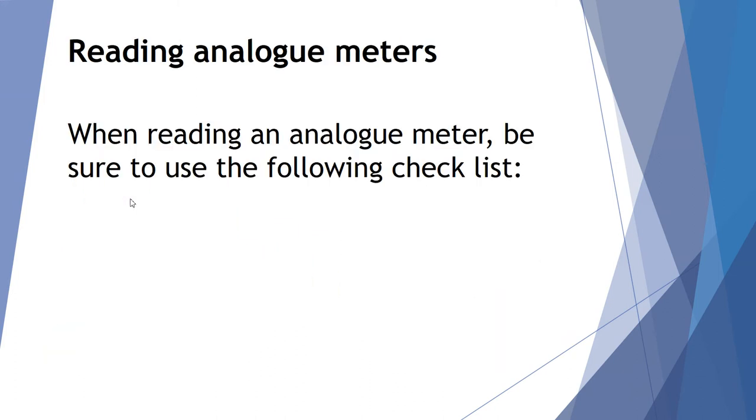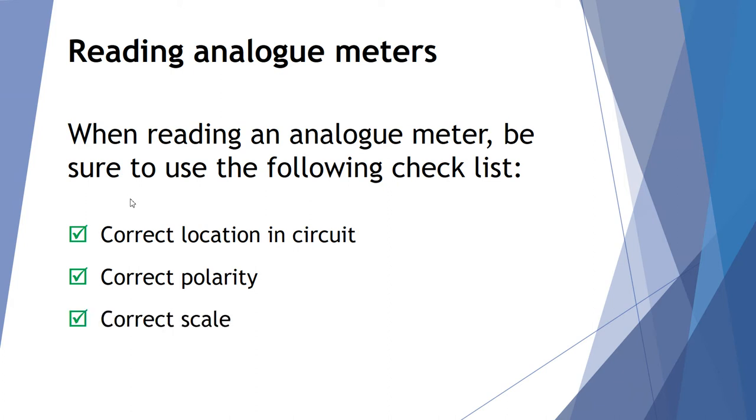When you're reading an analog meter there's a couple things we want to check. First of all, have we put it correctly in the circuit? Is it located in the right spot? Have we placed our meter in correct polarity? We'll get on to polarity a little bit later. Are we reading off the correct scale and have we read the meter correctly?